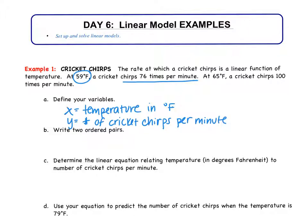So then we have two ordered pairs. First ordered pair at 59 degrees Fahrenheit, the cricket chirps 76 times per minute. Second ordered pair at 65 degrees Fahrenheit, the cricket chirps 100 times per minute.